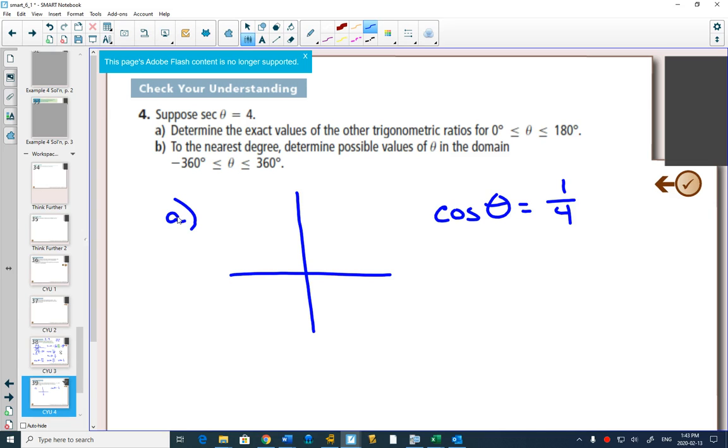So when I draw it, this side would be 1, this would be 4, this is my reference angle, which also happens to be my actual angle. Cos is also positive in quadrant 4. But in this one, all are positive in quadrant 1, and they're only looking between 0 and 180.